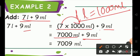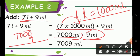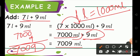Now there are milliliter in both places, so we add 7000 plus 9. The answer: 0 plus 9 is 9, and 0, 0, and 7 come in place. So we get the answer 7009 milliliter.